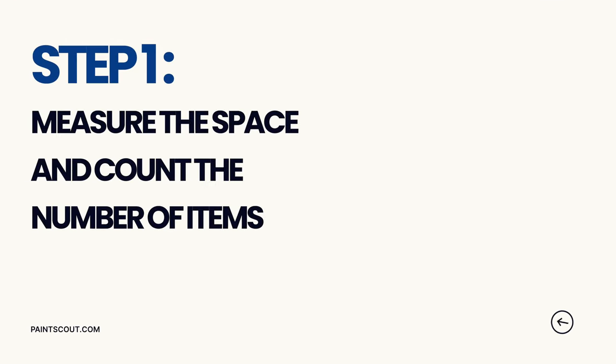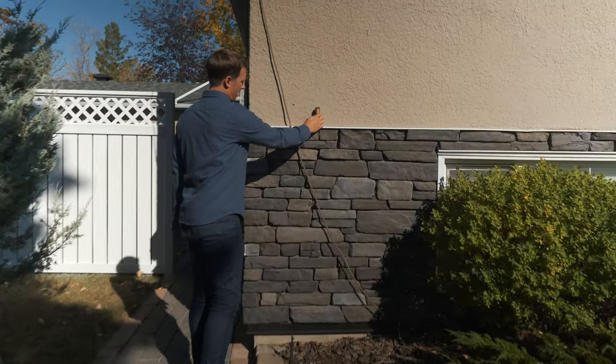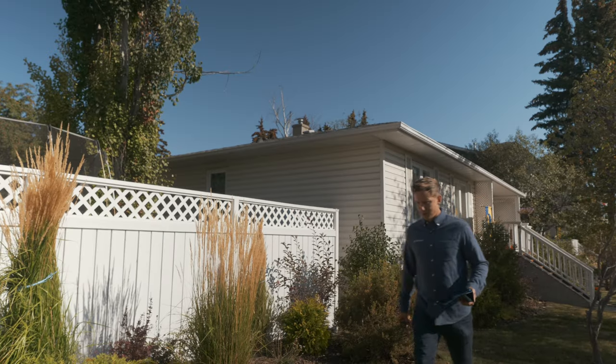The first step to figure out how long this project is going to take is to get the measurements of the home and the surfaces that we're going to be painting. To do this, we can first use a laser measurer. Second, if you have a walking measuring tool, this can be helpful as well, as you can walk out the circumference of the home. Another way to measure would be to walk the home out using your regular everyday step. Now that we've got the length of the home, we need to figure out the height — a great way to do this is with the laser measurer, as it's accurate and easy to use.